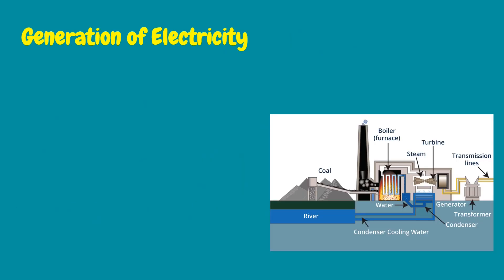Electricity generation is the process of generating electric power from sources of primary energy. For utilities in the electric power industry, it is the stage prior to its delivery to end users or its storage. Electricity is not freely available in nature, so it must be produced.